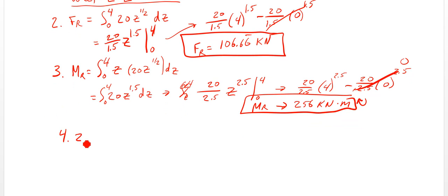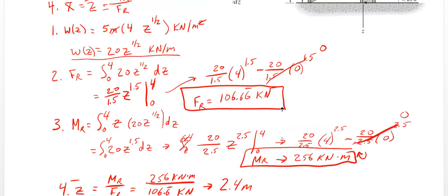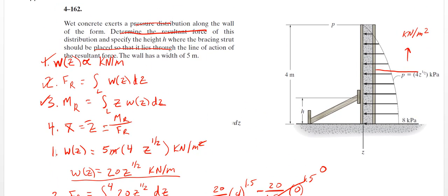Step 4, z-bar equals MR over FR. 256 kilonewton meters over 106.6 kilonewtons, and that becomes 2.4 meters. So that's the height from the top since z starts up here.